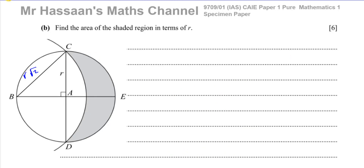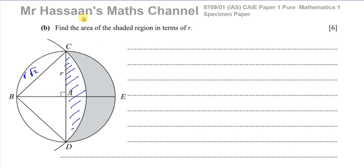Now part B says: find the area of the shaded region in terms of R. We know that this length is R root 2 and this is 90 degrees. The shaded region is like the area of the small semicircle minus the area of the sector of the big circle — specifically the sector CD of the bigger circle.